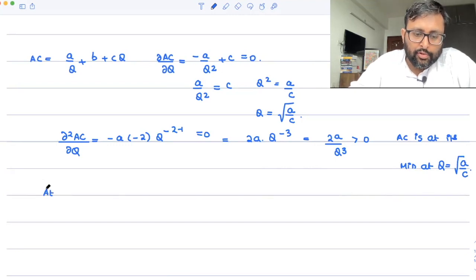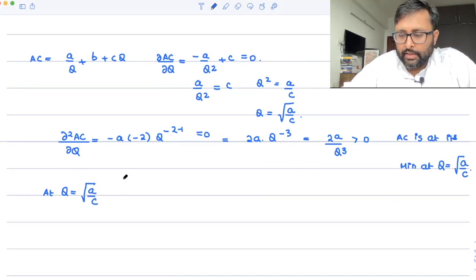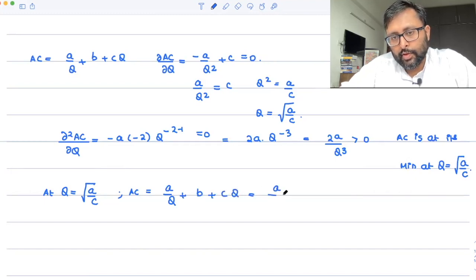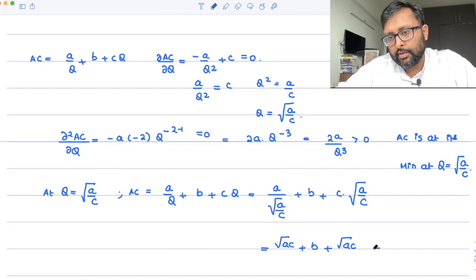Then the other part is that once you have found out this critical point, you need to find out what is the level of AC and MC there. So at q = √(a/c), your AC = a/q + b + cq. So a/√(a/c) + b + c·√(a/c). So you will be having √(ac) + b + √(ac).